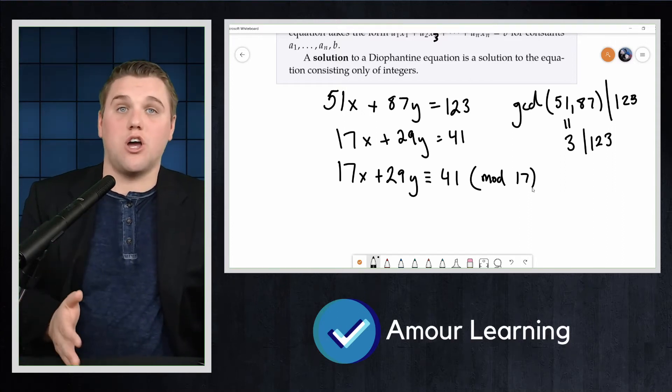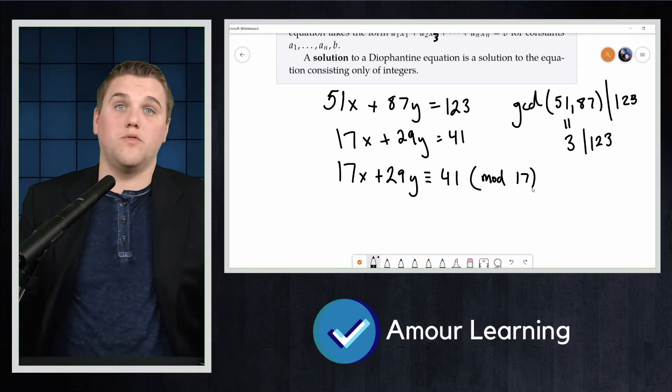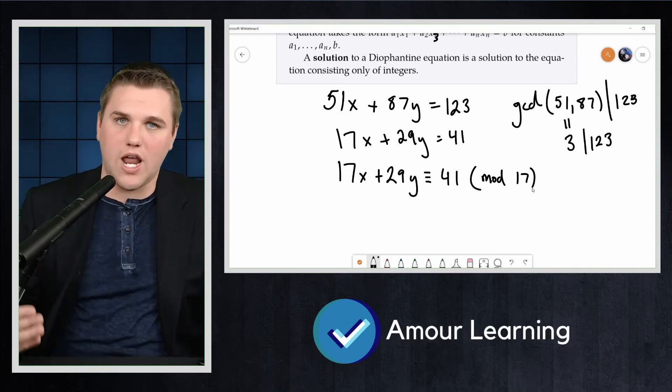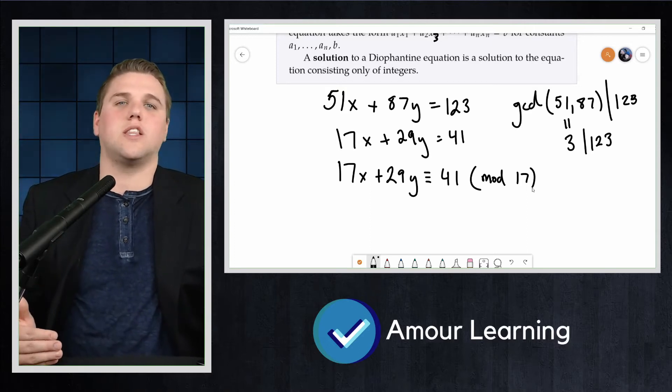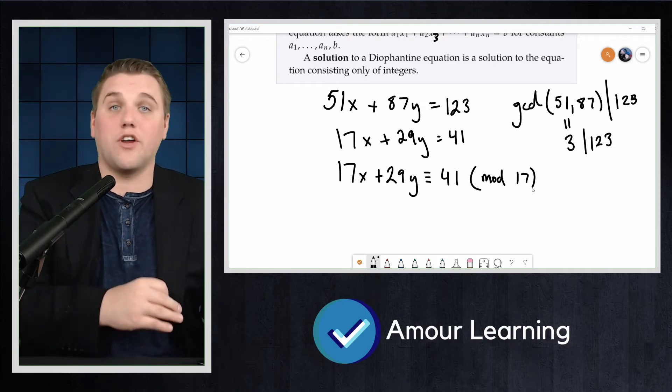This will allow us to reduce the congruence to just one variable. We could have also moved to a congruence modulo 29, although there is usually a good reason to select the smaller choice as this will allow us to reduce the other coefficient.